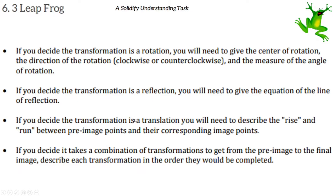These are very important bullets. If the transformation is a rotation, you will need to give the center of rotation (also called the point of rotation), the direction of rotation — clockwise or counterclockwise — and the measure of the angle of rotation, like 90 degrees or 180 degrees. If the transformation is a reflection, you will need to give the equation of the line of reflection.